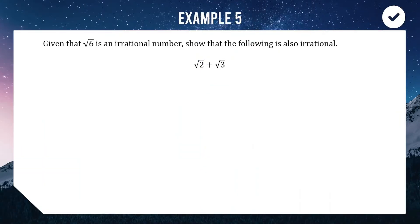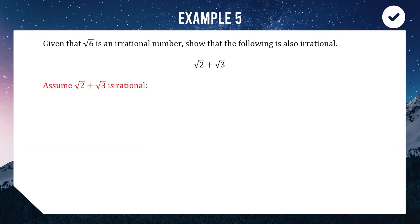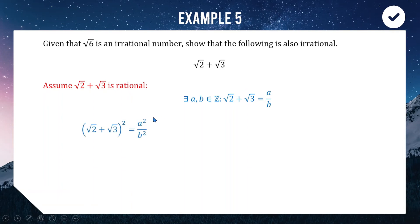Moving on to a slightly tougher one. The question tells us that √6 is irrational — we don't need to prove that, though we've done similar proofs today. We need to show that √2 + √3 is also irrational. We use a contradiction proof, so we assume √2 + √3 is a rational number and write it as a/b, where a and b are co-prime integers.